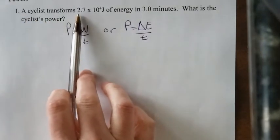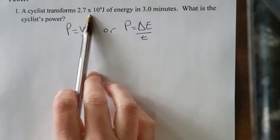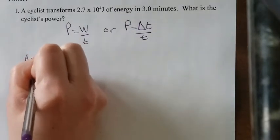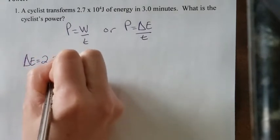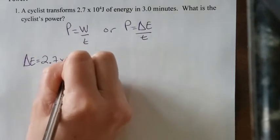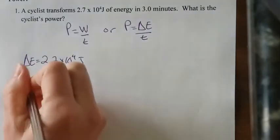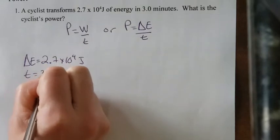A cyclist transforms 2.7 times 10 to the 4 joules of energy. So we know what the change in energy is. Delta E is equal to 2.7 times 10 to the 4 joules in 3 minutes. So time is 3 minutes.